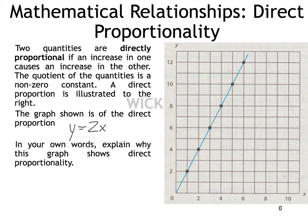This graph represents direct proportionality because an increase in the x-axis causes an increase in the y-axis. The slope is positive and constant. This particular graph obeys the equation y = 2x. You can check: if x is 1, y should be 2; if x is 2, y should be 4 — and the graph confirms this relationship.